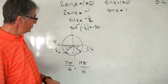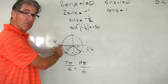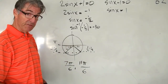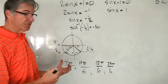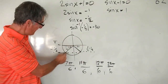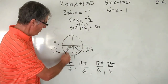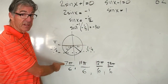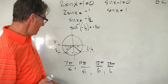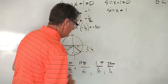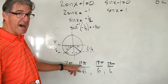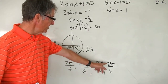Going around a second cycle, we add 2 pi radians (which is 12 pi over 6) to each angle. So 7 pi over 6 plus 12 pi over 6 gives 19 pi over 6, and 11 pi over 6 plus 12 pi over 6 gives 23 pi over 6. These are the four angles satisfying sine x equals negative 1/2.